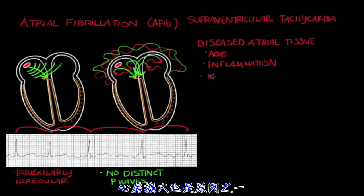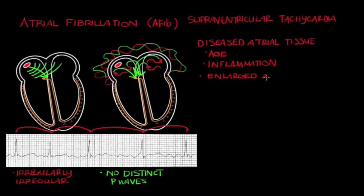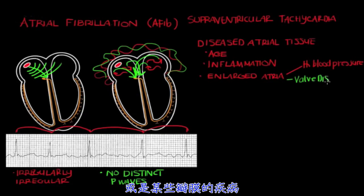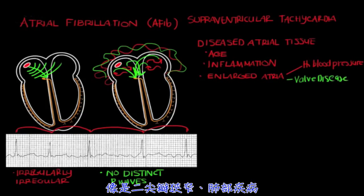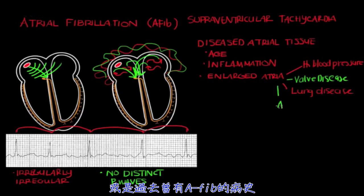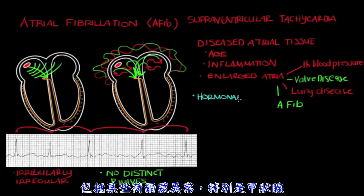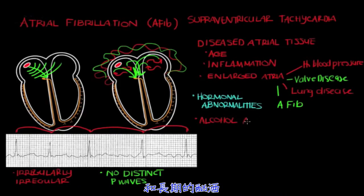Anything that causes atrial enlargement also increases risk. This includes years of high blood pressure, certain types of valve disease like mitral stenosis, certain types of lung disease, and previously having AFib. Other risk factors include certain hormonal abnormalities — specifically thyroid hormone — and years of alcohol abuse.